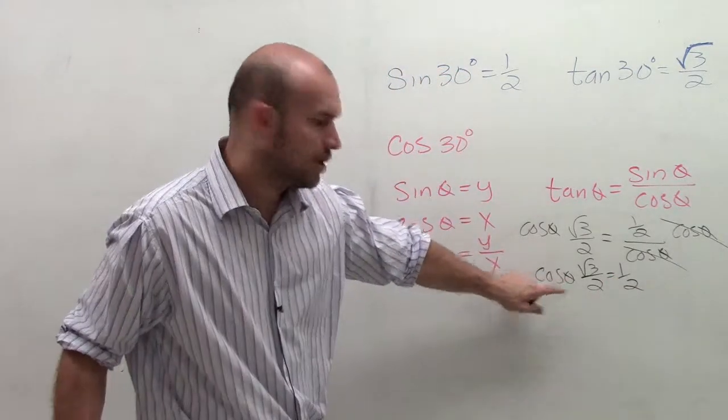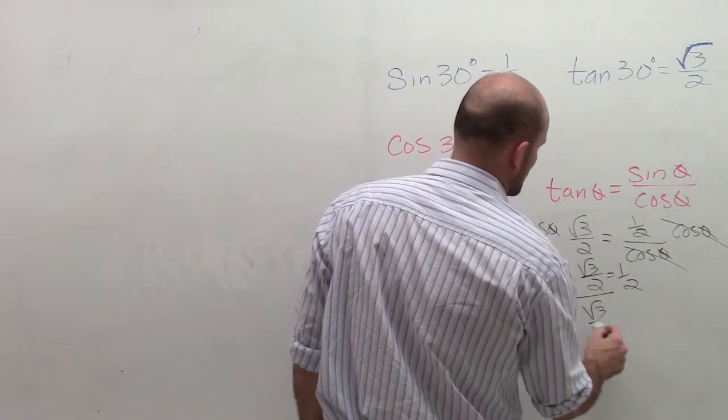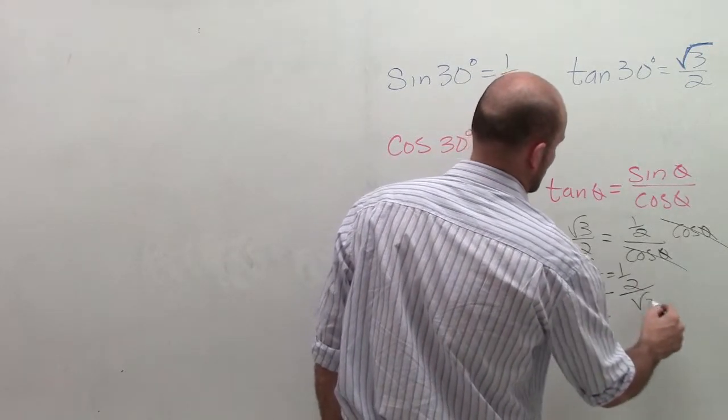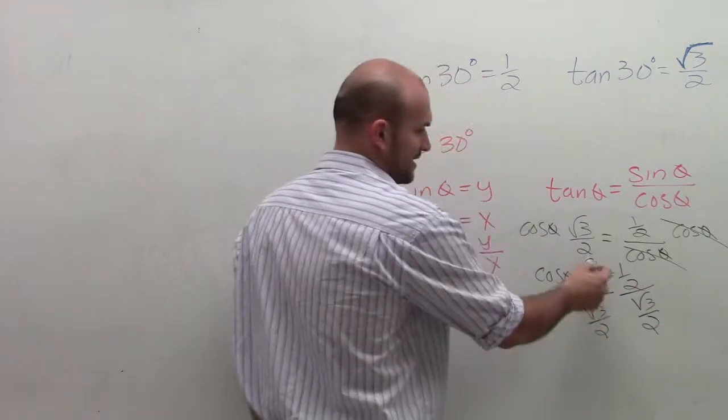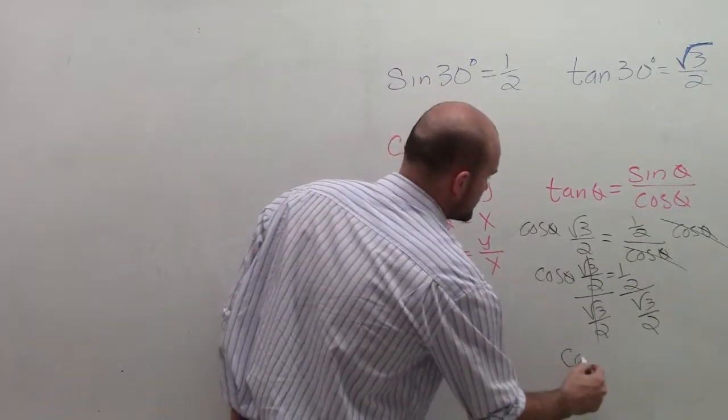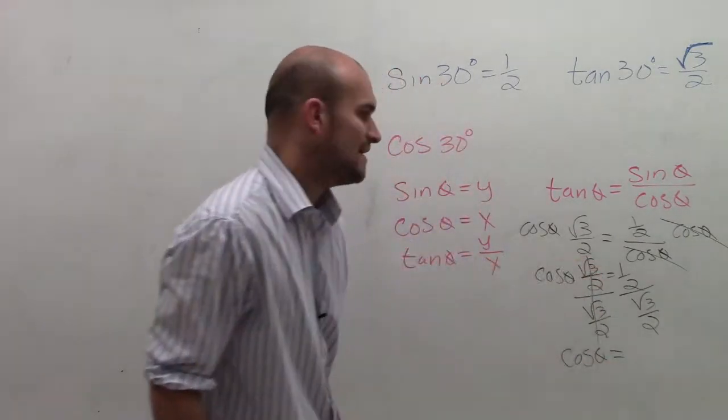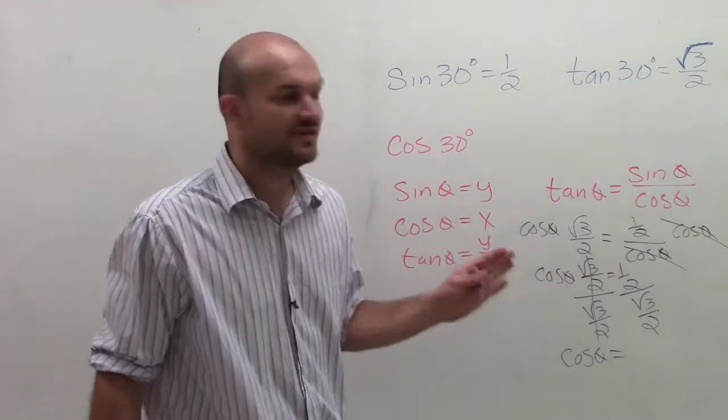Now to solve for cosine of theta, I need to divide by the square root of 3 over 2. And then again, this divides out to 1. So I have cosine of theta equals 1/2 divided by square root of 3 divided by 2.